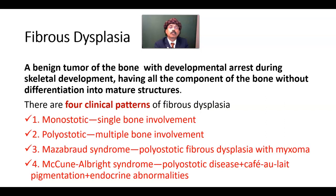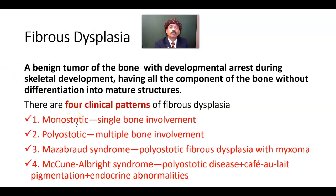What are the four clinical patterns of fibrous dysplasia? It may be confined to one bone, then we call it monostotic. If it is present in multiple bones, we call it polyostotic.